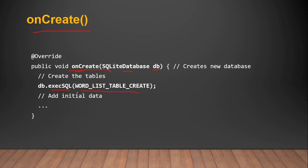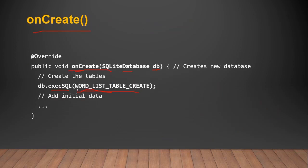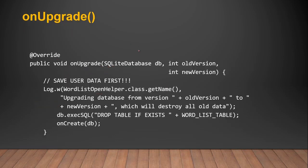The onCreate method has an SQLiteDatabase object, and by using this object — which is db — we call executeSQL and pass the variable of our query that we declared previously. This will create our database, and executeSQL will create our table inside the SQLite database. You can also add initial data to your table after it has been created by the Android operating system.